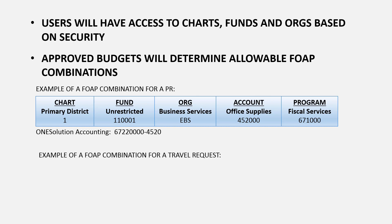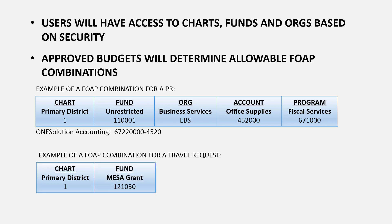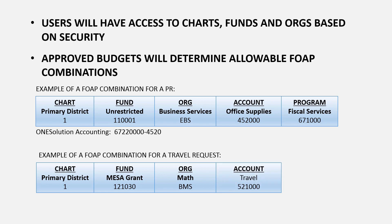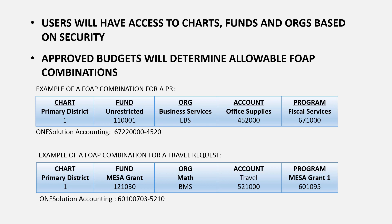The second example is a FOP combination entered on a travel request using MESA grant funds. The user would enter Chart 1, then fund 121030 for the MESA grant, then org BMS for math, then account 521000 for travel, and finally program code 601095 for MESA grant 1. For reference, the One Solution accounting would have been 60100703-5210.